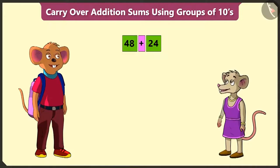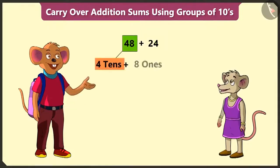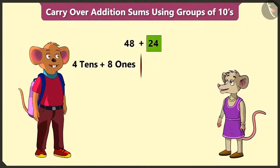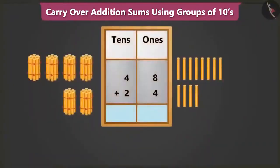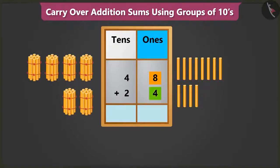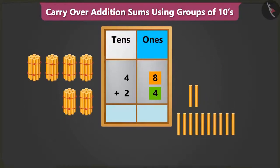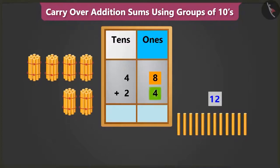How do we do that? 48 is 4 tens and 8 ones. Similarly, 24 means 2 tens and 4 ones. Now, to add both these numbers, we have to place them in the tens and ones boxes. First, let's add the numbers in the ones place. We have to add 8 ones to 4 ones. Count after 8: 9, 10, 11 and 12. This means 8 ones and 4 ones add up to 12 ones.